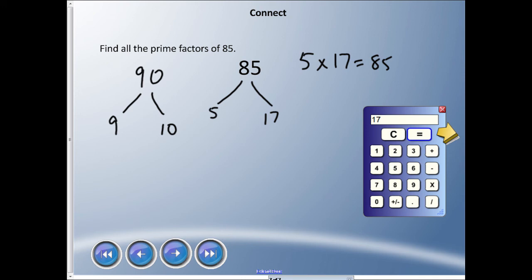Now, are 9 and 10 prime numbers? No, they're not. So I can say, well, we did this before: 3 and 3 are 9. And what's going to multiply into 10 here? Well, 2 and 5. Now, let's see if these all multiply together.